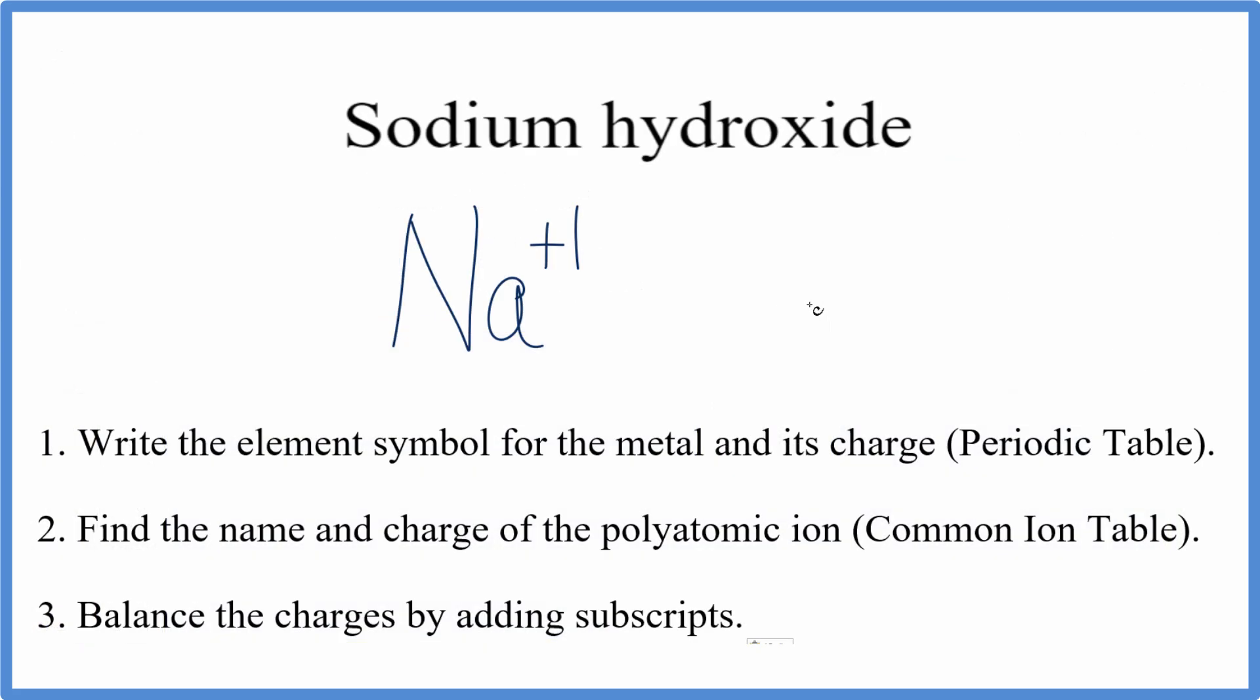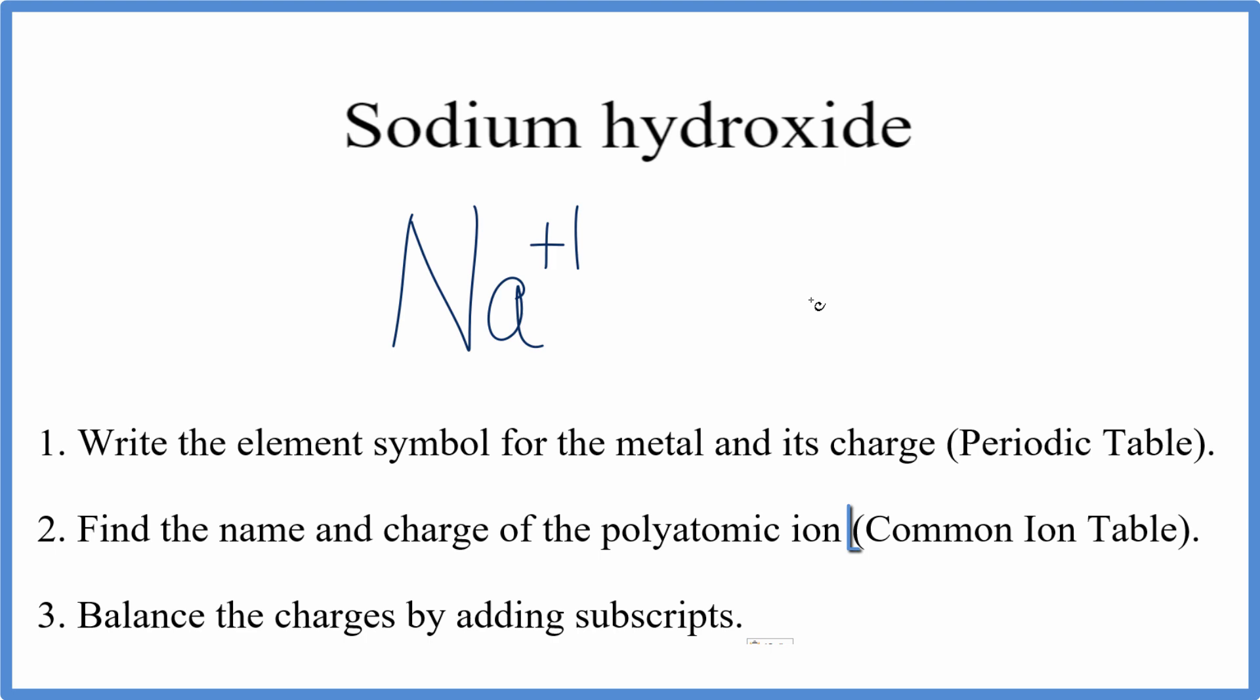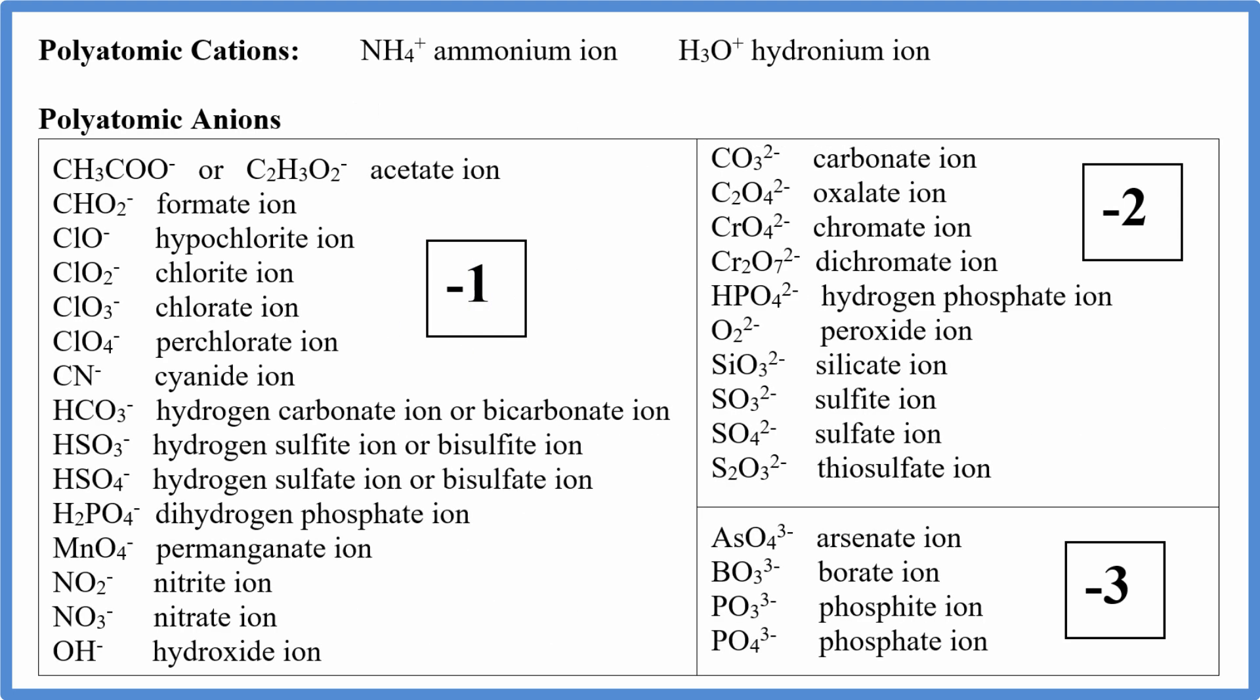For the hydroxide, that's not on the periodic table. We need to look at a list of common polyatomic ions. As we look at the list, we can see that the hydroxide ion is OH minus, so we write OH minus.